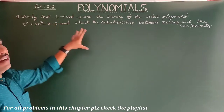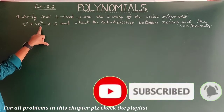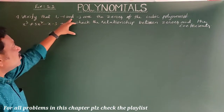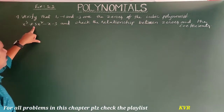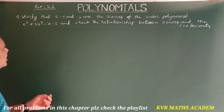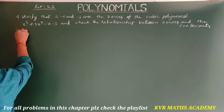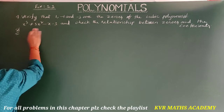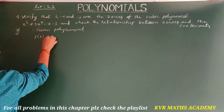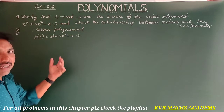This is the fourth and final question in Exercise 3.3: verify that 1, -1, and -3 are the zeros of the cubic polynomial x³ + 3x² - x - 3, and check the relationship between zeros and coefficients. Let P(x) = x³ + 3x² - x - 3. Let us check whether 1, -1, and -3 are zeros.